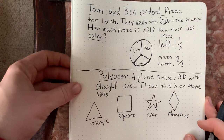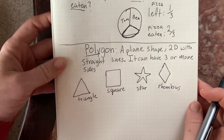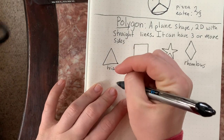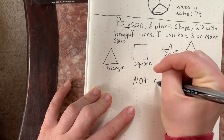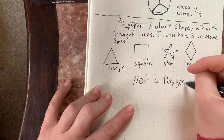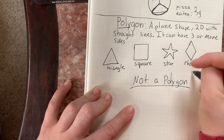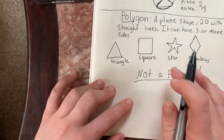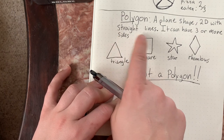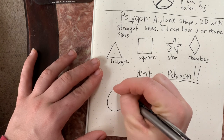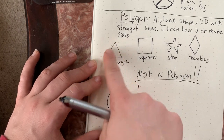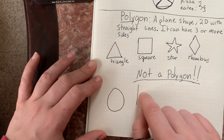Now there are also shapes that aren't polygons — not all shapes are polygons. That could be a circle. That could be just one line — one line is not enough; we have to have three or more in order to make a polygon. So 'not a polygon' — anything that has less than three sides or uses lines that are not straight.